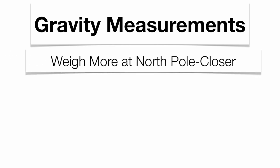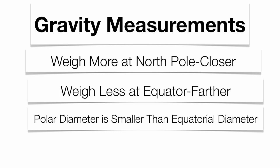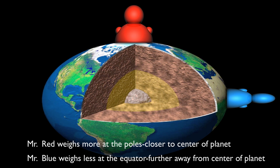Gravity measurements support the idea that the Earth is somewhat oblate in nature. You tend to weigh a little bit more at the North Pole and South Pole because you're closer to the center of the planet, and a little bit less at the equator because you're farther away from the center of the Earth. The center of the Earth is where gravity comes from — the closer you are to that center of gravity, the more you weigh; the farther away, the less you weigh, only by a fraction of a pound. The distance from North Pole to South Pole is a little smaller than the distance around the equator, which supports the oblate spheroid shape. Mr. Red weighs a little more because he's technically closer to the center of the planet, while Mr. Blue weighs a little less because he's farther from that gravitational attraction.